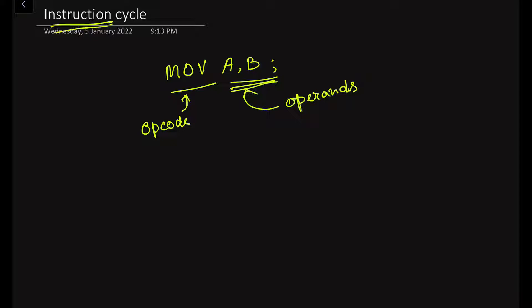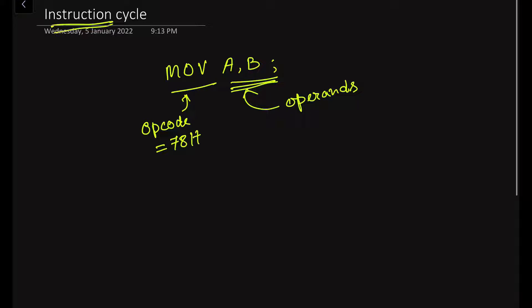The operand is the data on which the operation is being performed by the processor. The opcode is the operation code. For the MOV instruction, the opcode for the 8085 microprocessor is 78H. This is a one-byte instruction given as an example. Instructions may be of one byte, two bytes, or sometimes three bytes — we have already learned about instruction word sizes in previous videos.